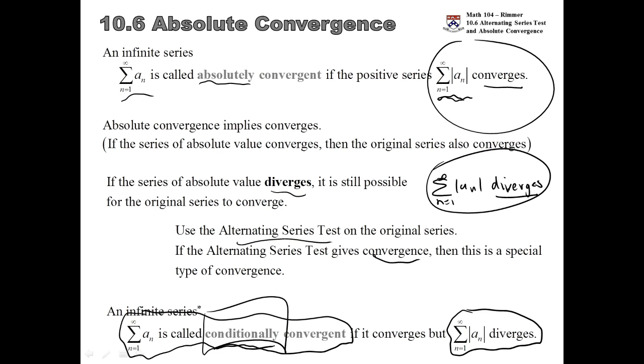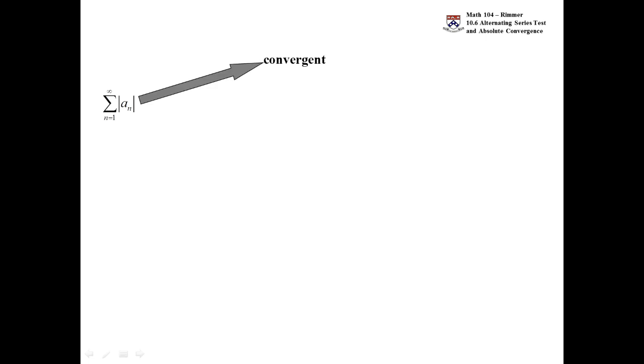I made a flowchart which will help. You start off considering the series where all the negatives turn positive — essentially this is called the series of absolute values. If that converges, then that makes the original series have the special title of being absolutely convergent, and in turn we can say our standard type of convergence.